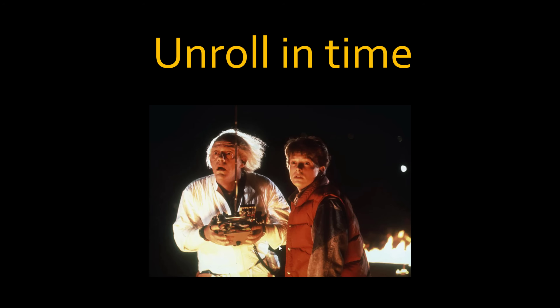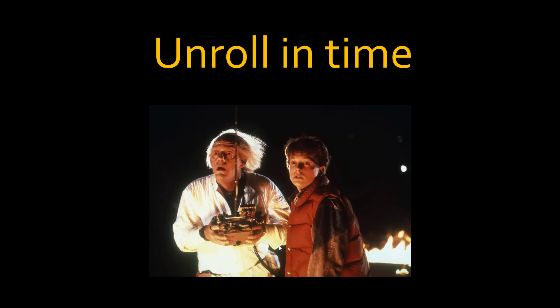If you unroll this thing in time, this is how the architecture will look like. Many people get confused — they think this is a neural network with so many layers. Actually, there is only one layer. Look at this time axis: T1, T2, T3. It's the same layer represented at different time steps. When unrolled, to predict the word 'need,' it needs to know about the word 'today,' which appeared at the very beginning of the sentence.